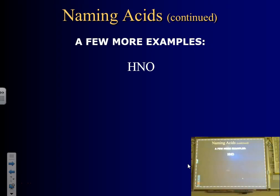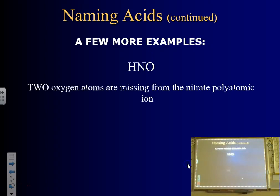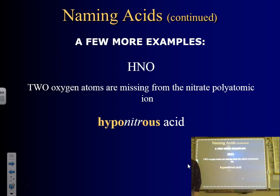Now if we've taken two oxygens away from nitrate, we get NO, which is the polyatomic hyponitrite — hypo means two oxygens were removed. So the acid name is hyponitrous acid. Keep in mind that hypo and hydro are not the same thing, and we'll never have a 'hydrohypo.' We use 'per' when adding an oxygen.